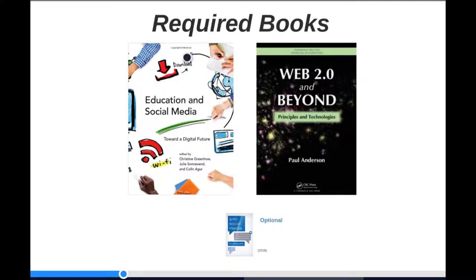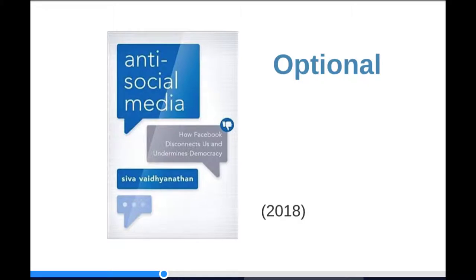There are two required books for this course. Education and Social Media is a 2016 book edited by Christine Greenhal, Julia Sonnevand, and Colin Auger. We will supplement this with Paul Anderson's 2012 book, Web 2.0 and Beyond, which is in some ways now a history book, but I felt the background he provided was good grounding for any educator. I'm also suggesting an optional book, Siva Vaidhyanathan's 2018 Anti-Social Media, which looks at how social media, and Facebook in particular, move through algorithms and practice to disconnect us rather than connect us, and in the process undermine democracy. This book provides a nice balance to the optimistic view of the use of social media in education.